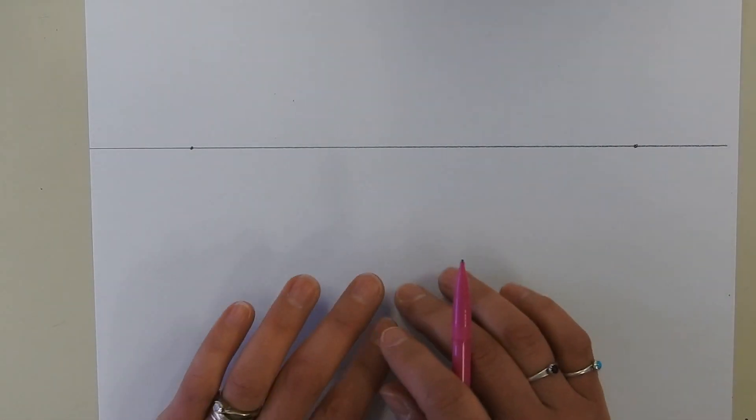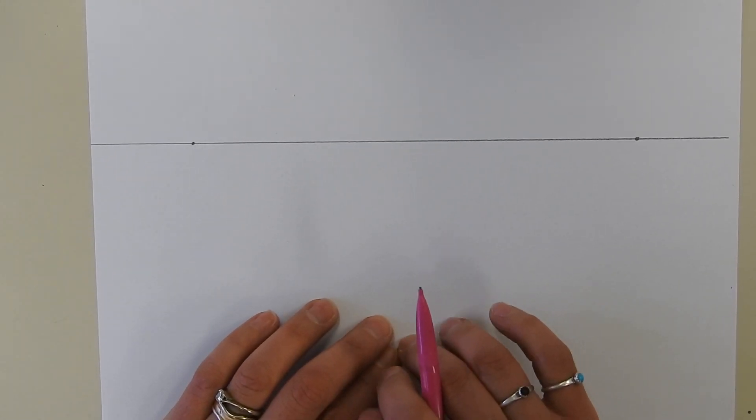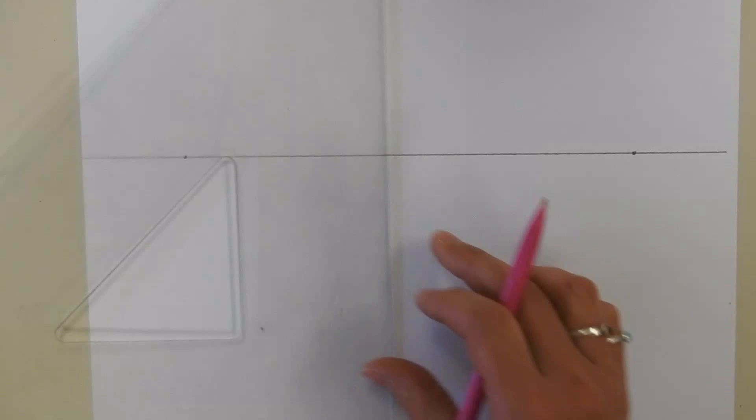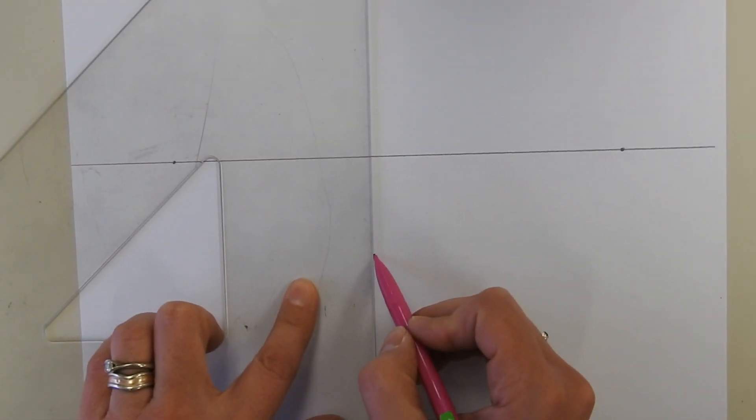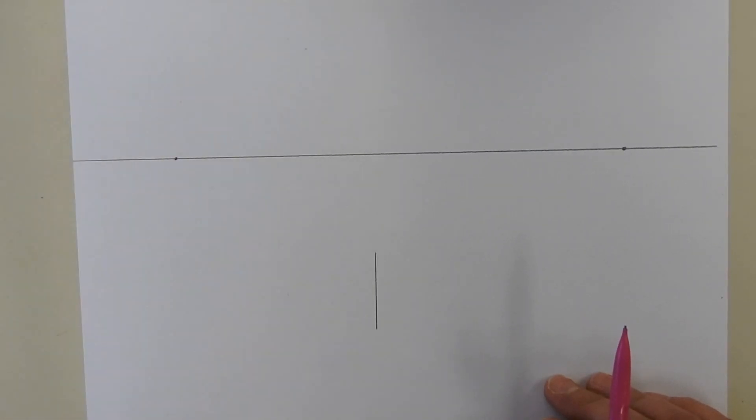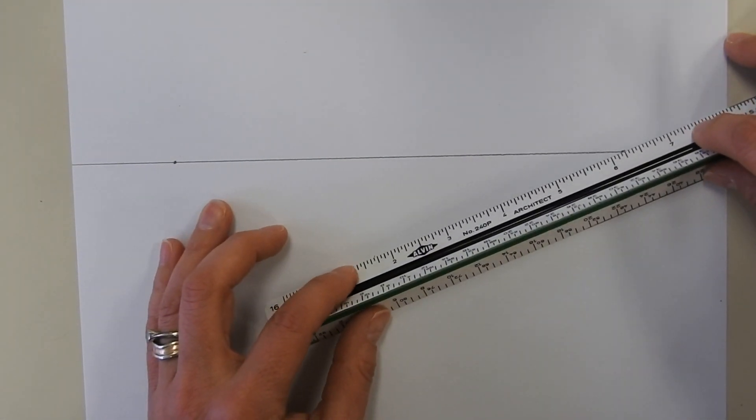So the first thing I want to do is draw a cube below the horizon line. Down here we're going to start with that leading edge right here, and then we'll take a ruler and make the connections.